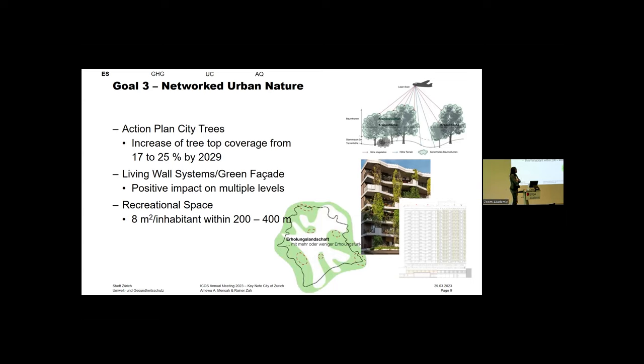Goal number three is a networked urban nature. For example, there's an action plan for city trees. The action plan is focused on trying to increase the tree top coverage in the city from 17% to 25%, which is great for the urban climate because you would have more shade and increase biodiversity. Then there are activities like living wall systems, green facades. There's actually a really high-rise building for Swiss standards that will get a completely green facade. It's supposed to be a role model for private investors. Then there's an entire action plan for improving the recreational space.